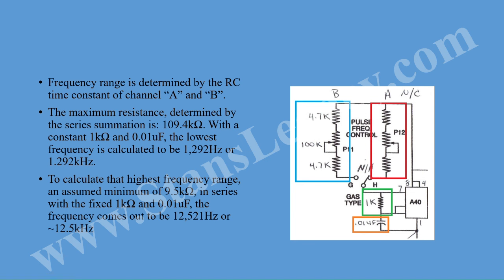The 555 has two independent channels selectable via the switch — either gas or hydrogen is assumed here. Channel A and channel B have the exact same component values and they're basically forming an adjustable RC frequency time constant network in conjunction with the fixed 1k and 10 nanofarad capacitor. The maximum resistance can be determined by the series summation of the potentiometer and the two resistors, which works out to 109.4 kilohms. This total in series with the constant 1k and capacitor produces a frequency of 1.29 kHz.